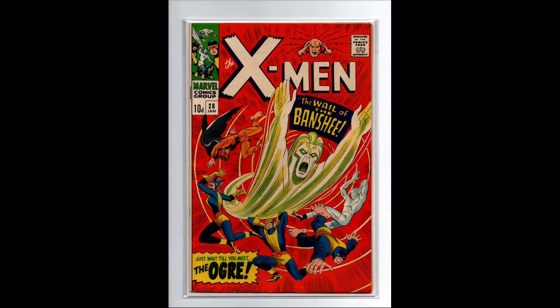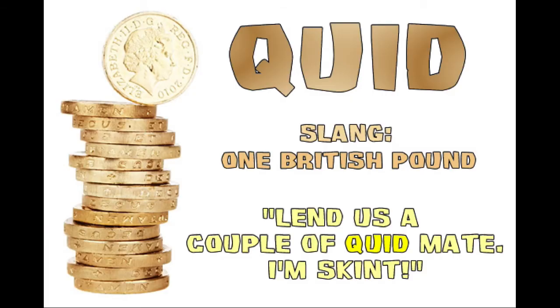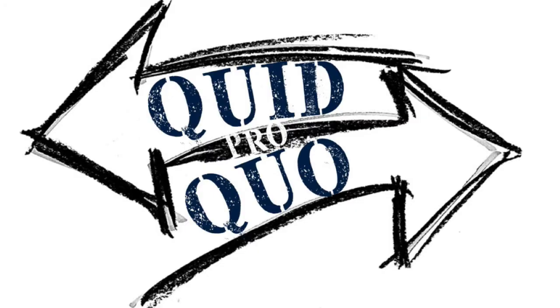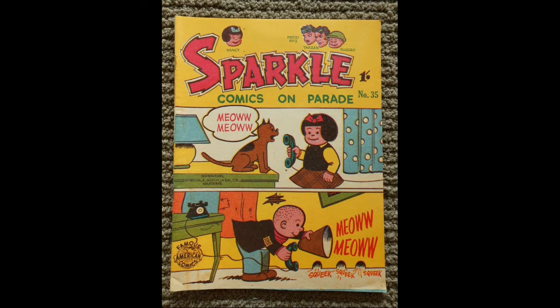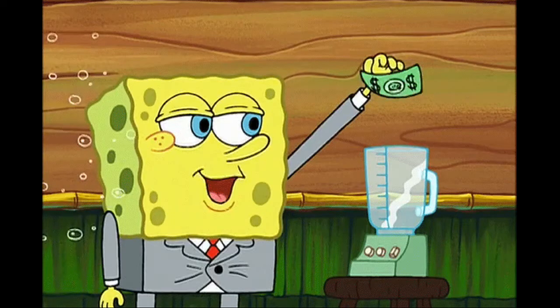A quid is slang for a pound. This possibly comes from the Latin phrase 'quid pro quo,' which means a favor granted in return for something. The shilling had the symbol of a forward slash with a hyphen next to it, which you can see on some comics with UK pricing pre-1971.